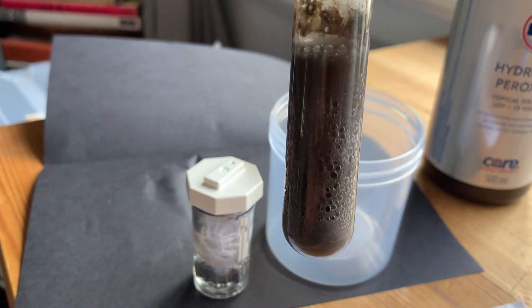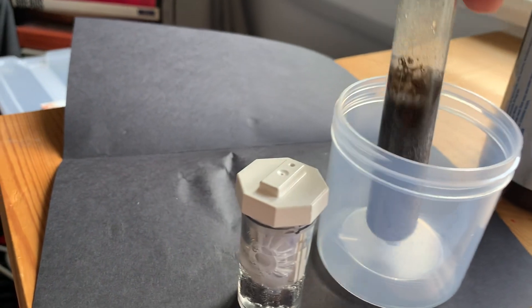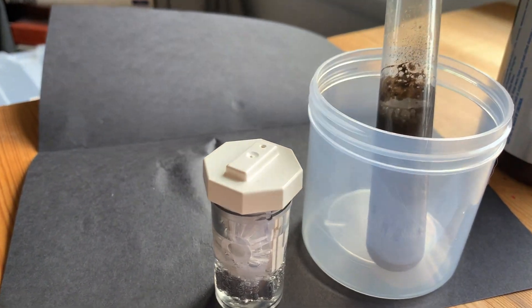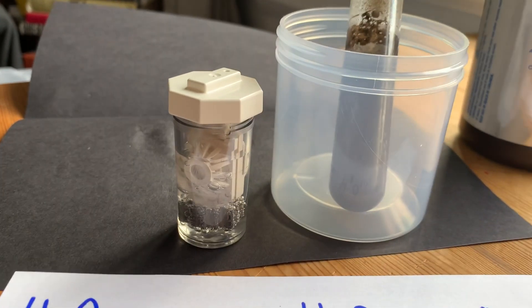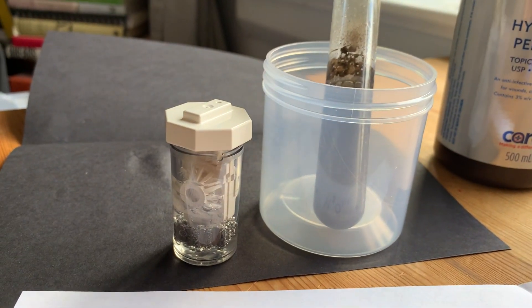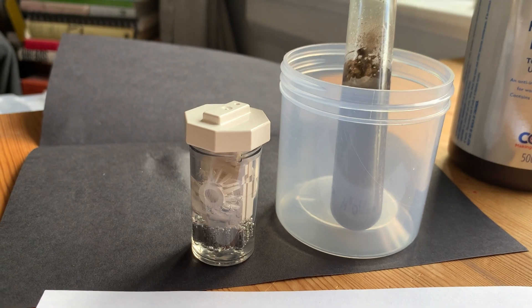This is proceeding faster, mostly because the manganese dioxide is powdered. That increases surface area. Surface area is one of the ways you can speed up or help control the rate of a reaction. Wow, it's really going there.